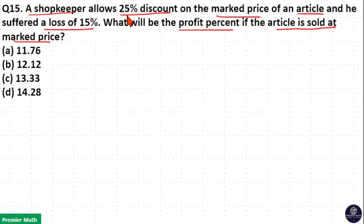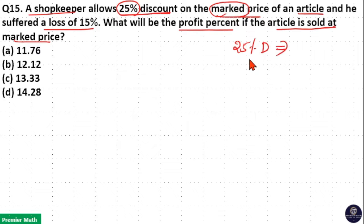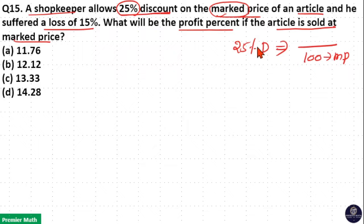25% discount on the marked price means: if 100 rupees is the marked price, then 100 minus 25 gives 75 rupees as the selling price.